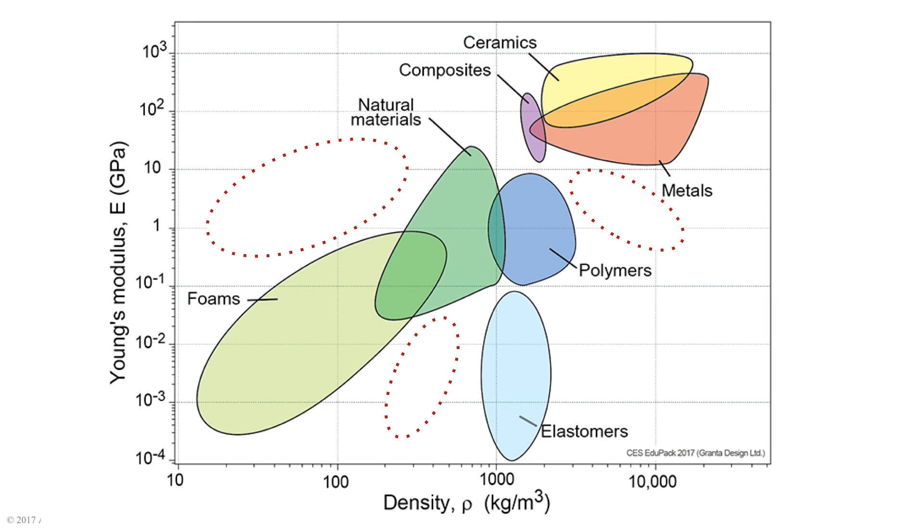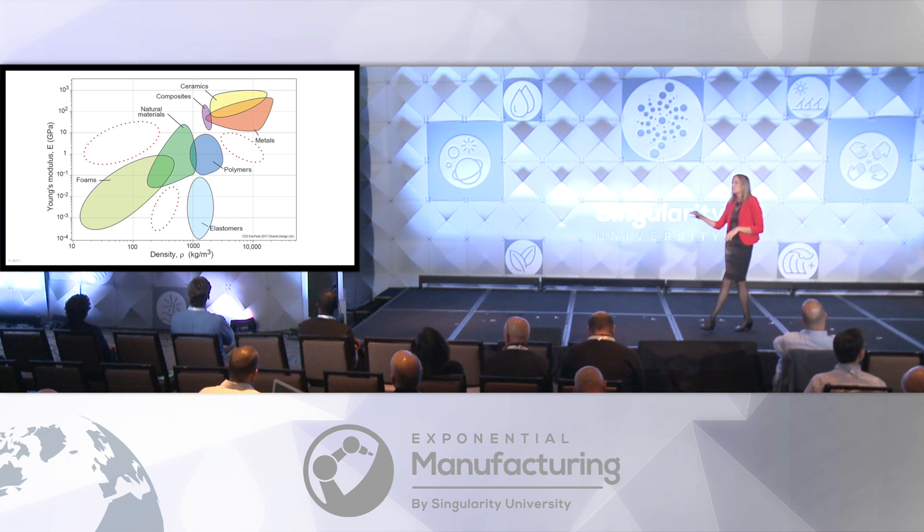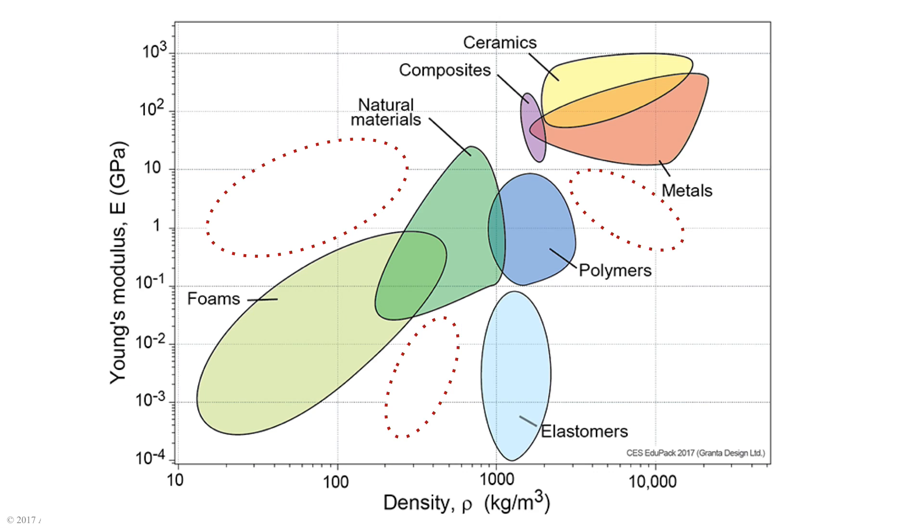Another way to think of this is that we're filling in the white space in material characterization charts like this. Material scientists in the room will recognize this as an Ashby chart. These are known materials and synthesized materials plotted, in this case density against Young's modulus. When we synthesize these micro lattices we can create material behavior that doesn't exist yet.